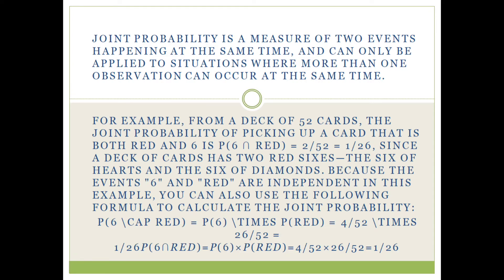Because the events of six and red are independent in this example, you can also use the following formula to calculate the joint probability: P(6∩RED) = P(6) × P(RED) = 4/52 × 26/52 = 1/26, and it all sums to 1/26.